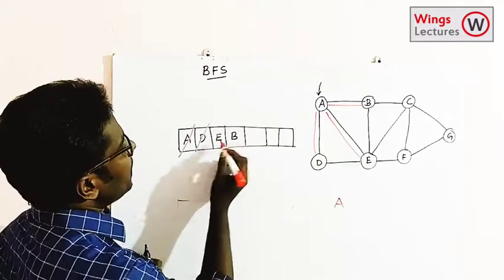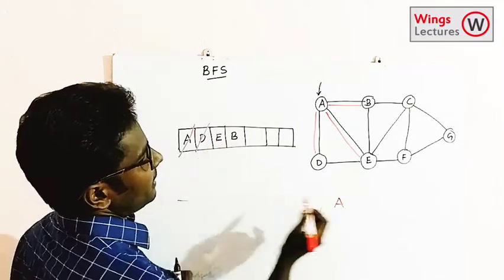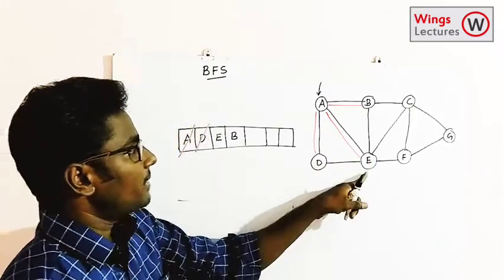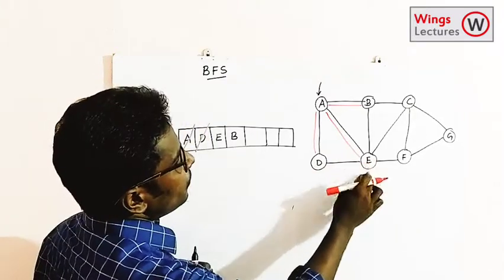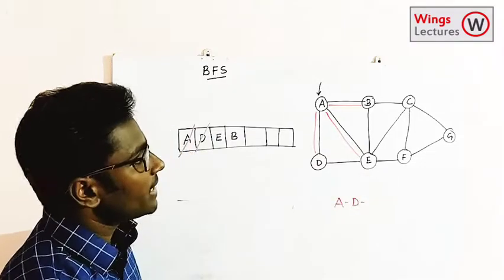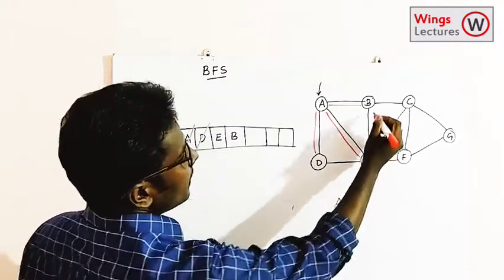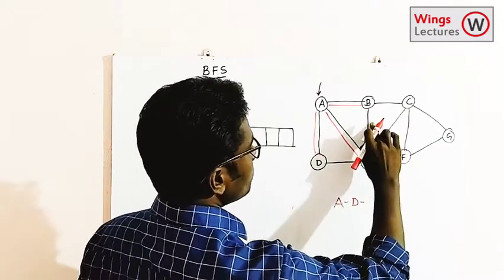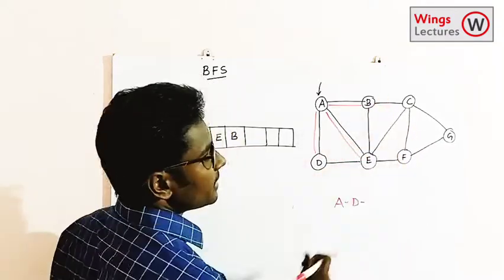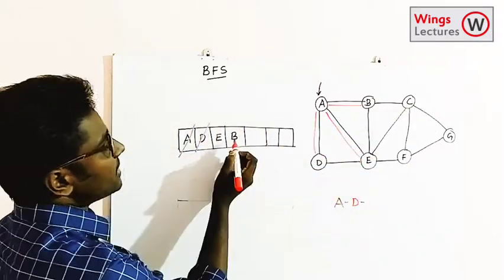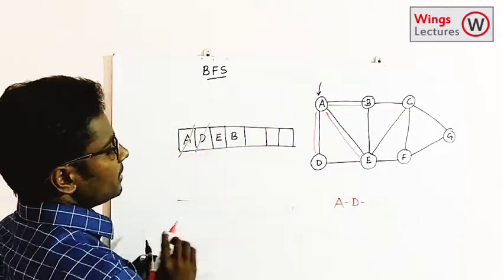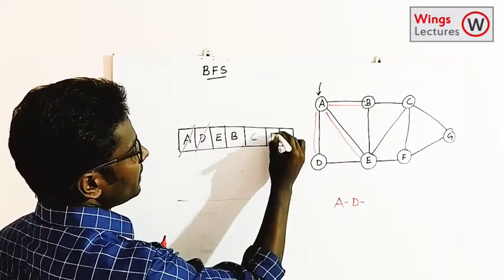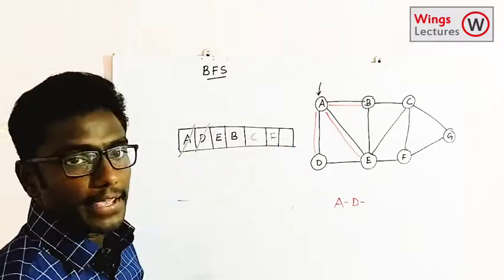Now for E, find the adjacent vertices. E has B, C, and F as adjacent vertices. B is already in the queue, so we only need to insert C and F into the queue.